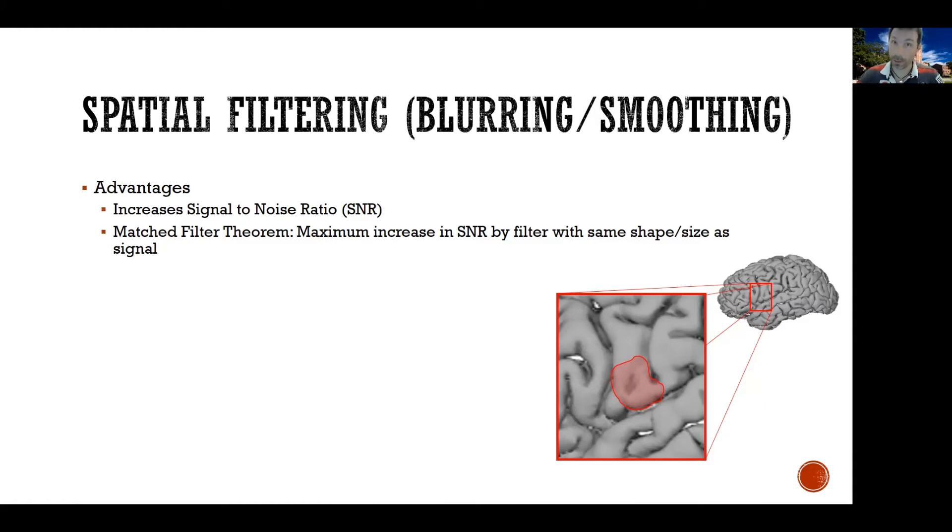The best smoothing I could possibly do would be if I smoothed exactly and only all the voxels in here. I would get the best bang for my buck, meaning I'll be taking all the voxels that are responding to my task and averaging them together. So I'd be getting rid of all the noise in all these voxels and I would only keep the signal. The problem, of course, is that when you start an analysis, you don't know how big and what shape your activations are. That's the end product of your analysis. So you don't really know how big the actual signal is and what shape it has.